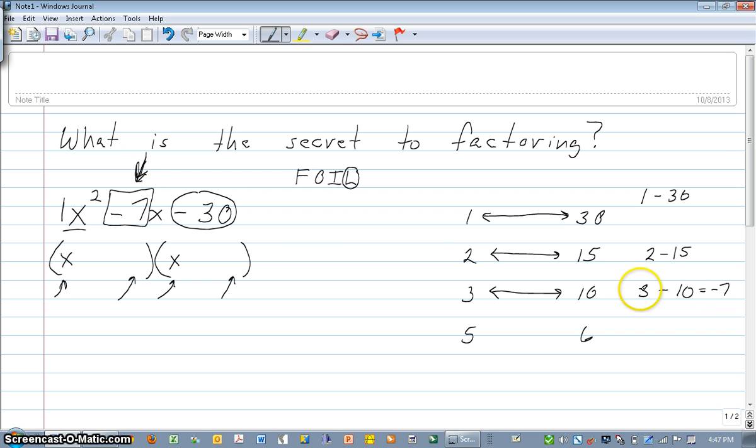So this tells us that the pair of numbers we're looking for is 3 and negative 10. So that gives me what I need for the factorization. Of course, these two wouldn't work because the difference between them is just 1. So I'm going to use positive 3 and negative 10.